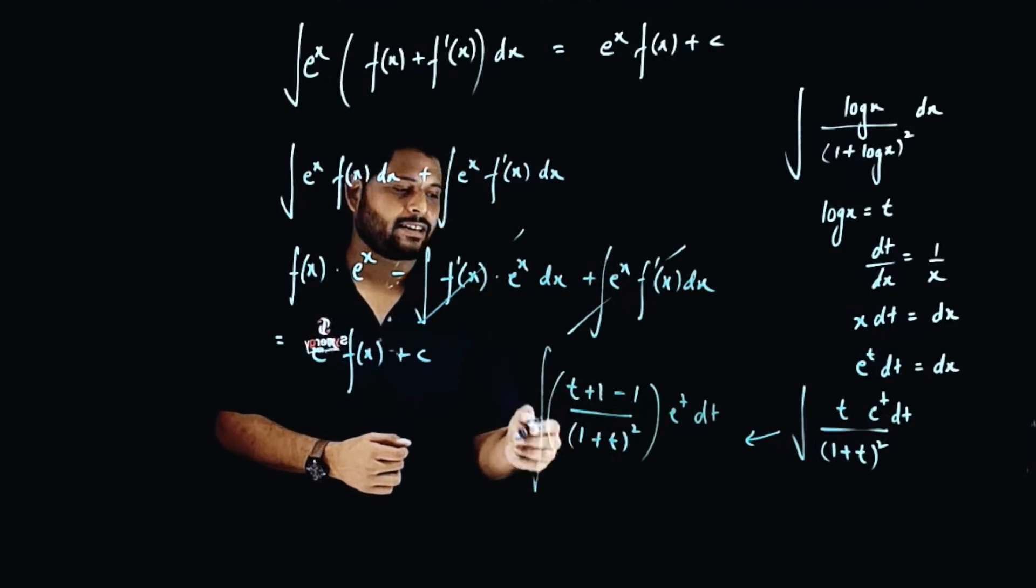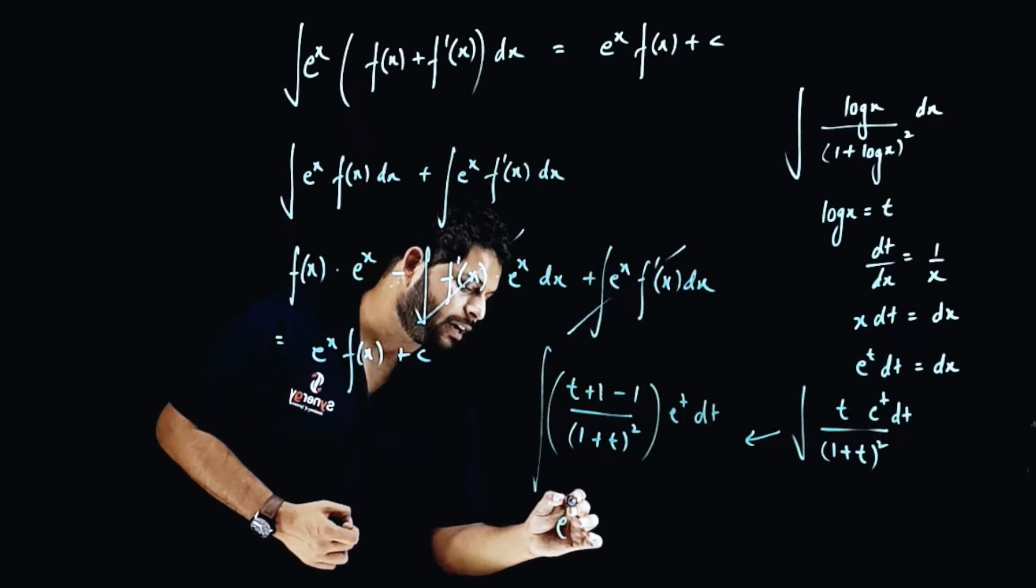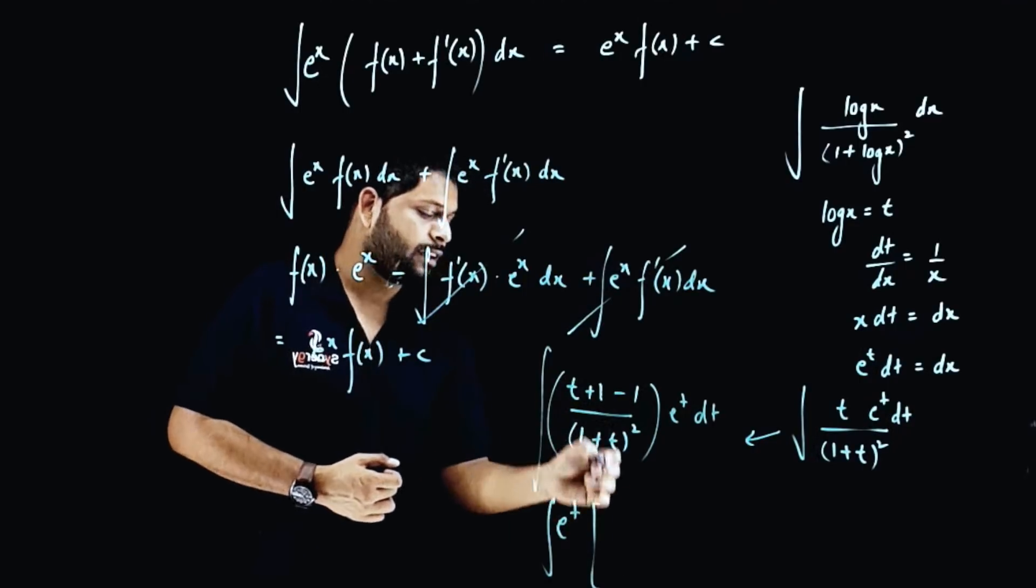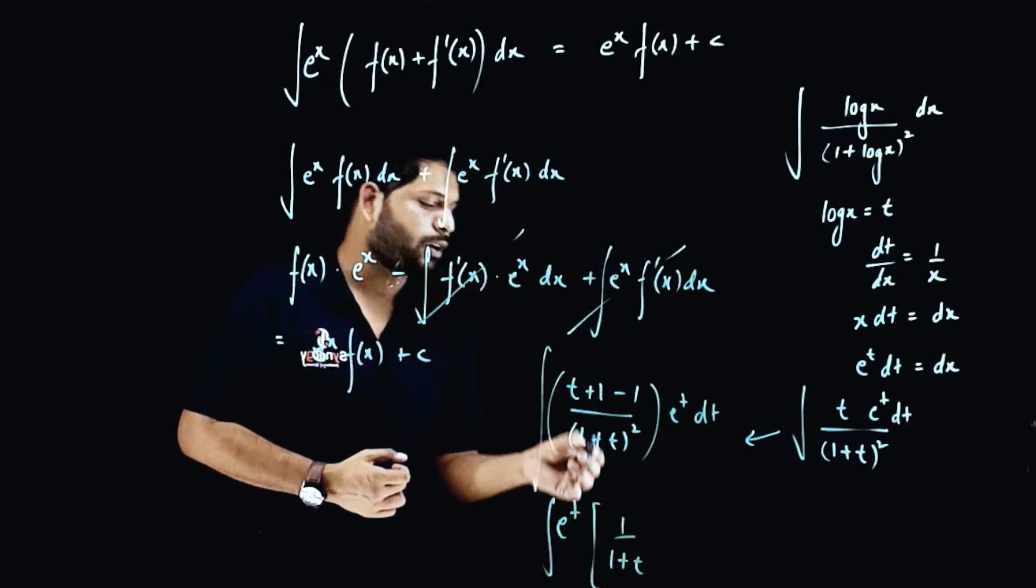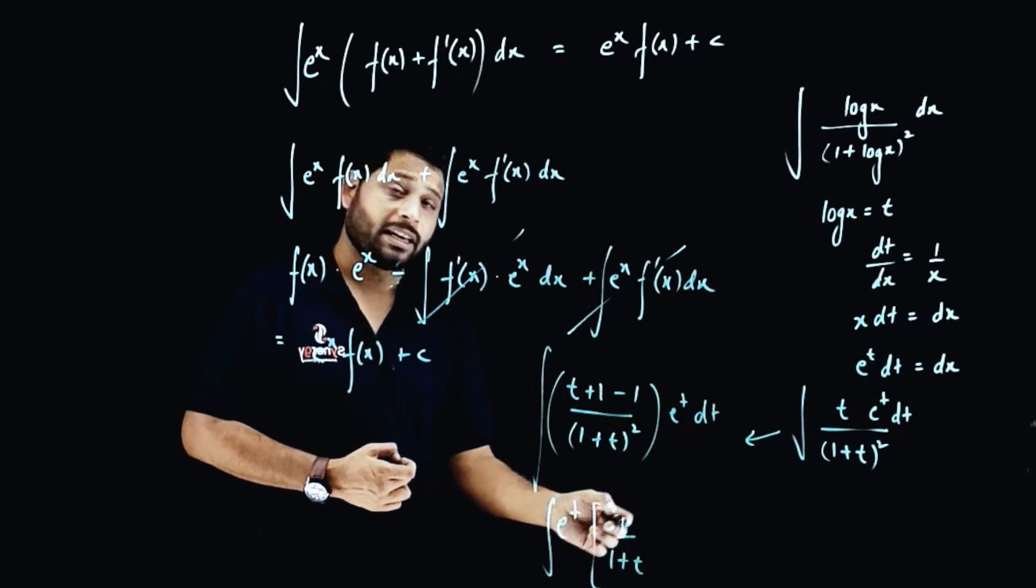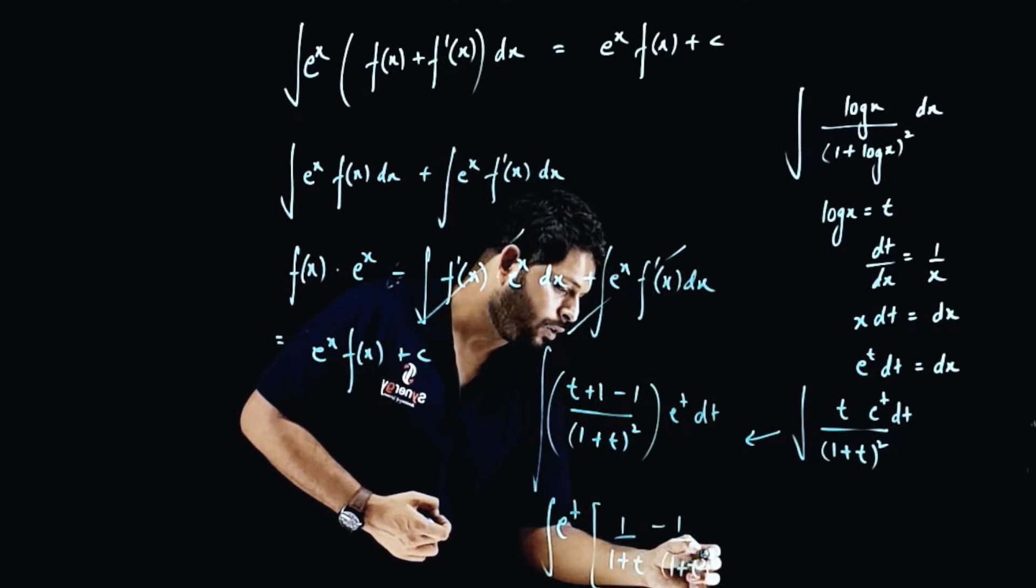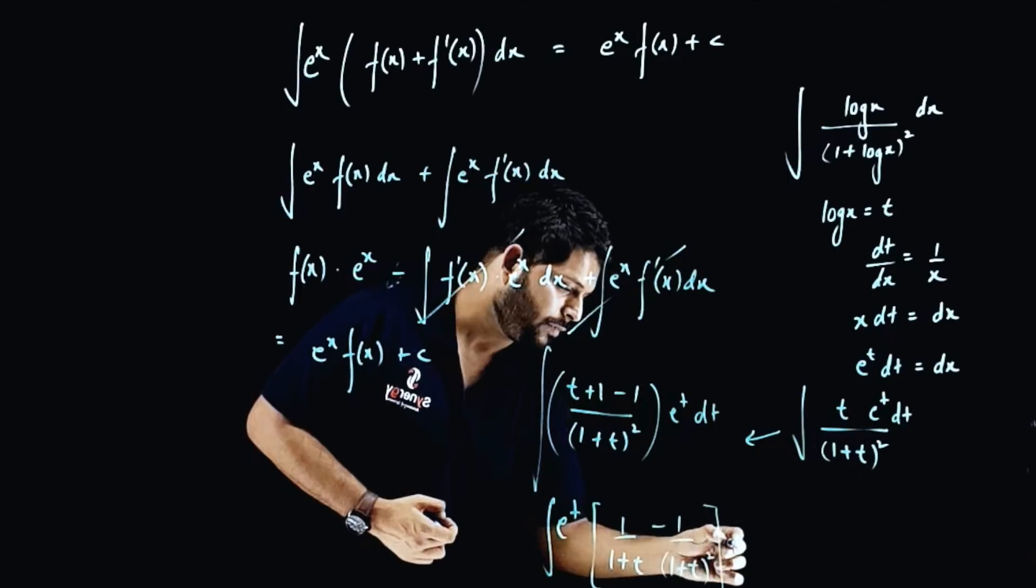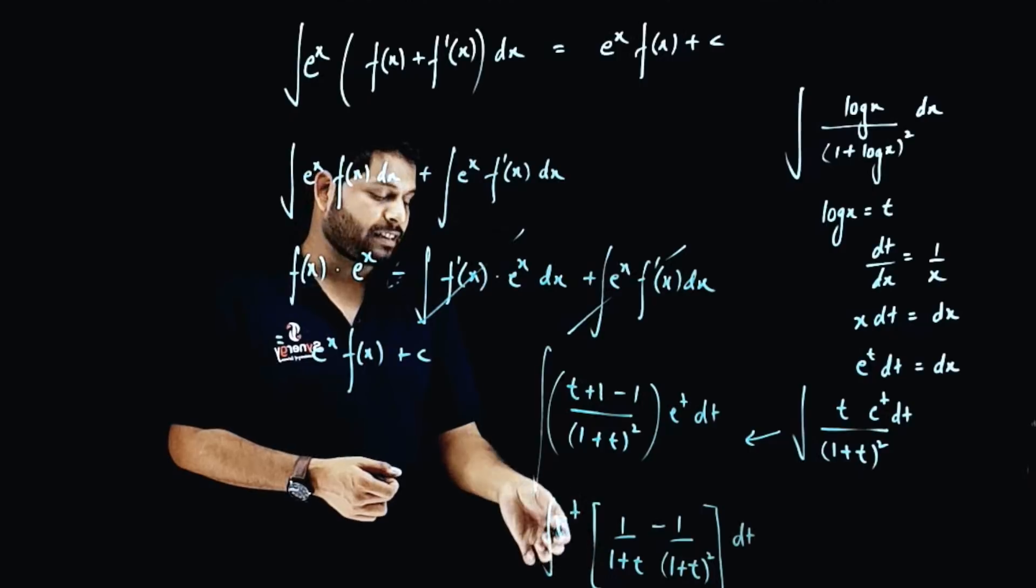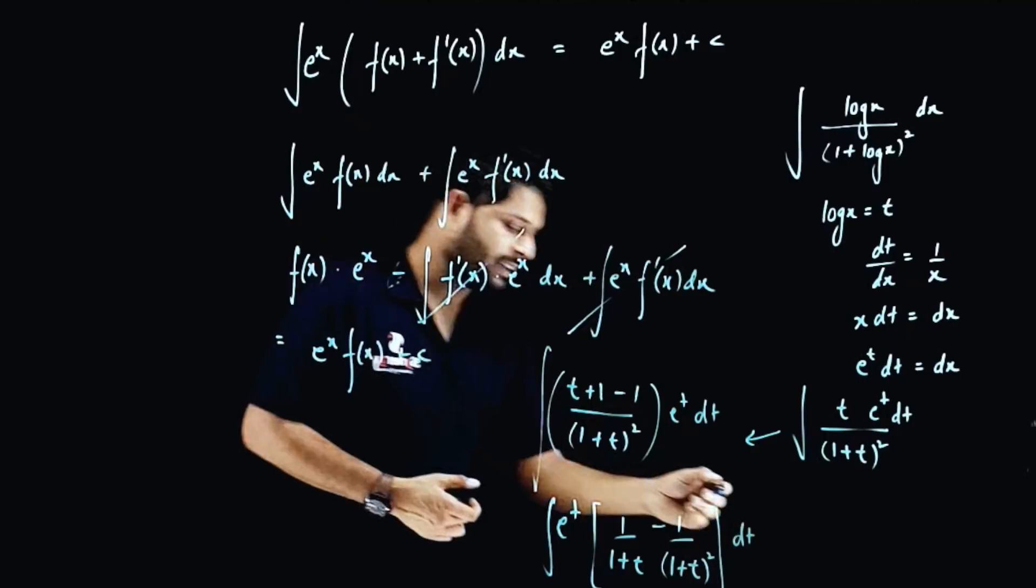I'm going to split it. We're getting e^t in the form of e^t·[1/(1+t) - 1/(1+t)^2]dt. If you see, this is function and this is the derivative of the function. Both are adding, which means this has a direct answer.